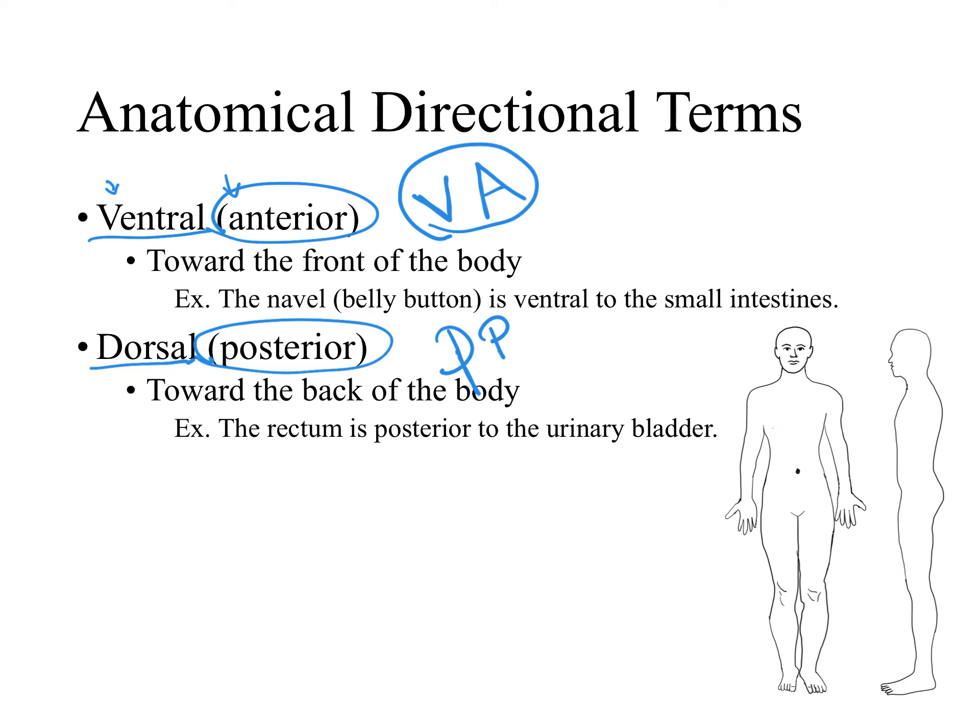If you know any language with a Latin or Greek origin, that will help you a lot, because many terms use Latin and Greek roots. For example, if you speak Spanish or Portuguese, you can remember the word vientre or ventre, which means belly. In anatomical position, your belly is anterior — it's the first thing you see. So ventral, or vientre, is anterior, and consequently dorso is posterior.